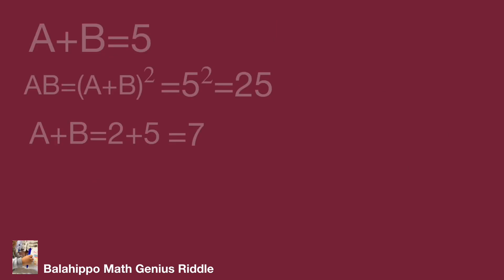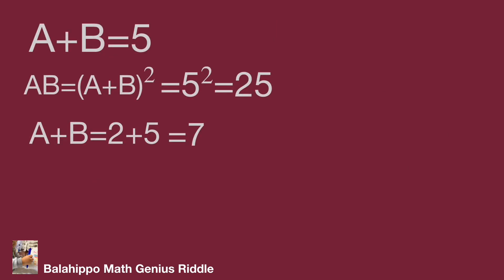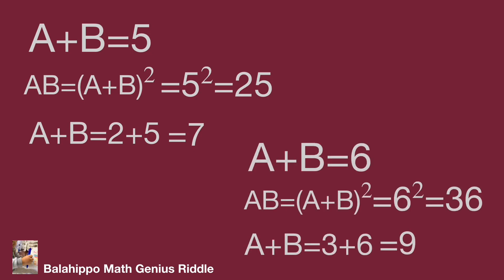Check A plus B equals 5. By the same logic, AB equals the quantity A plus B squared equals 25. Then A plus B equals 2 plus 5 equals 7. It is not the answer either. While A plus B equals 6, it leads to A plus B equals 3 plus 6 equals 9. It is not the answer either.